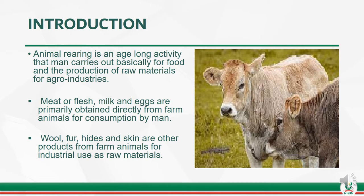Meat or flesh, milk, and eggs are primarily obtained directly from farm animals for consumption by man. Wool, fowl, hides, and skin are other products from farm animals for industrial use as raw materials.